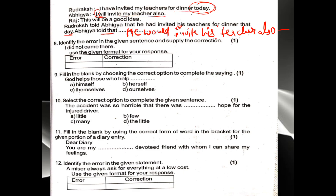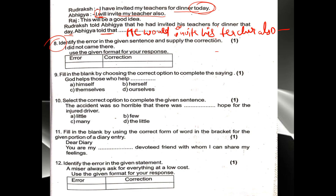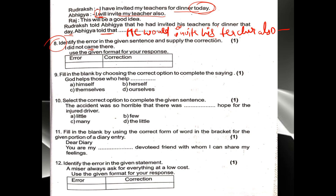Question 8: 'I did not came there.' Find the error. The error is 'came'. With 'do', 'does', and 'did', we always use the base form (first form) of the verb. 'Came' is the second form. So replace 'came' with 'come'. Correction: 'I did not come there.'